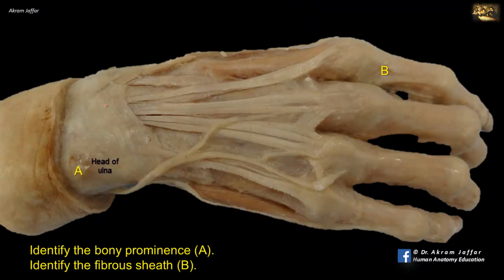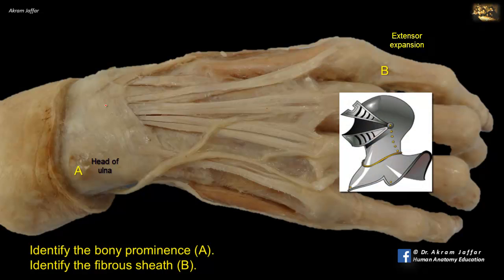B is the extensor expansion, the triangular aponeurosis that wraps around the dorsum and sides of the heads of the metacarpal and proximal phalanges. You can see here the visor-like hood which is attached on each side to the palmar ligament of the metacarpophalangeal joint.